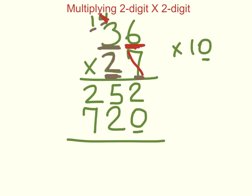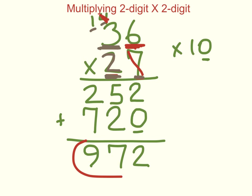The last step is to add this together. Two plus zero is two. Five plus two is seven. Two plus seven is nine. And there you have it: 36 times 27 equals 972.